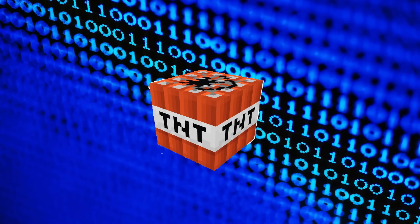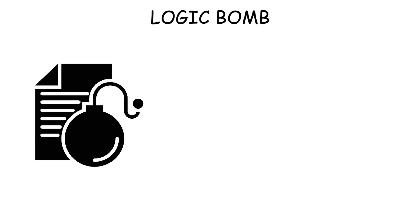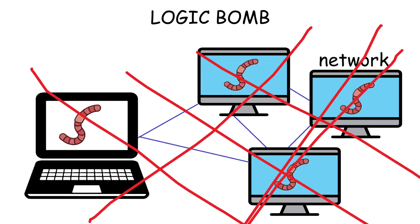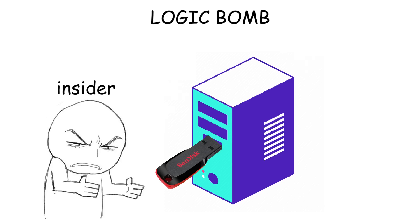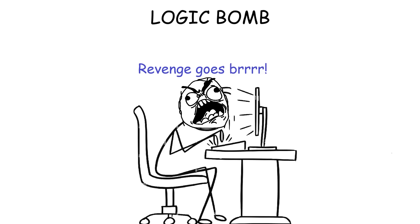A logic bomb is a type of malware that remains dormant in a system until triggered by a specific event or condition, such as a specific date, user action, or even an update. Once activated, it can disable security measures and then delete files or corrupt data. It does not spread on its own like a worm, but is intentionally planted inside software or files, often by an insider — for example, a fired IT staff member who programs a logic bomb to delete company data as revenge.